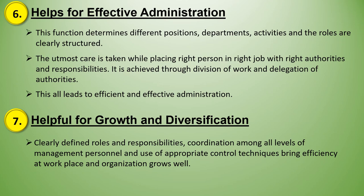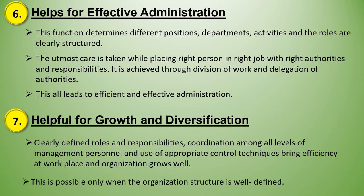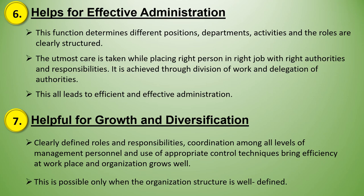The seventh point is helpful for growth and diversification. Clearly defined roles and responsibilities, coordination among all levels of management personnel, and use of appropriate control techniques bring efficiency at the workplace and the organization grows well. If roles and responsibilities are clearly stated in advance, there is coordination at all levels in the organization, and new and updated methods are used in the production process, these all directly bring efficiency and the organization grows well. This is possible only when the organizational structure is well defined.